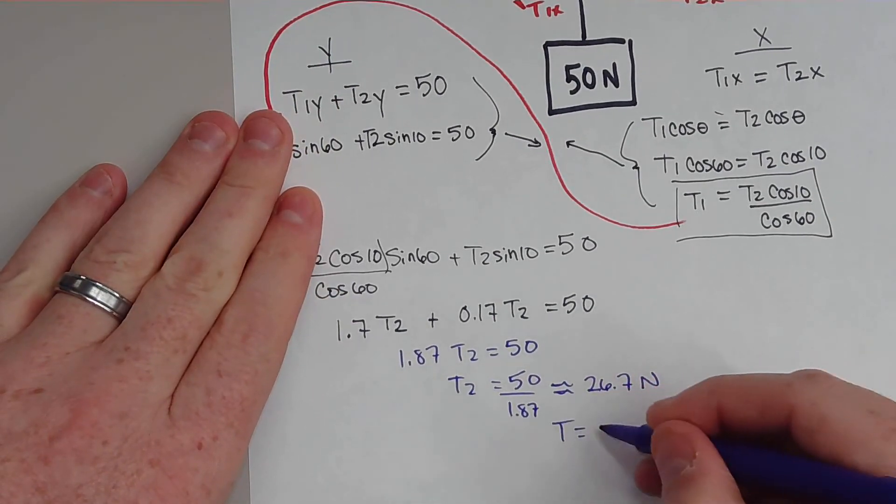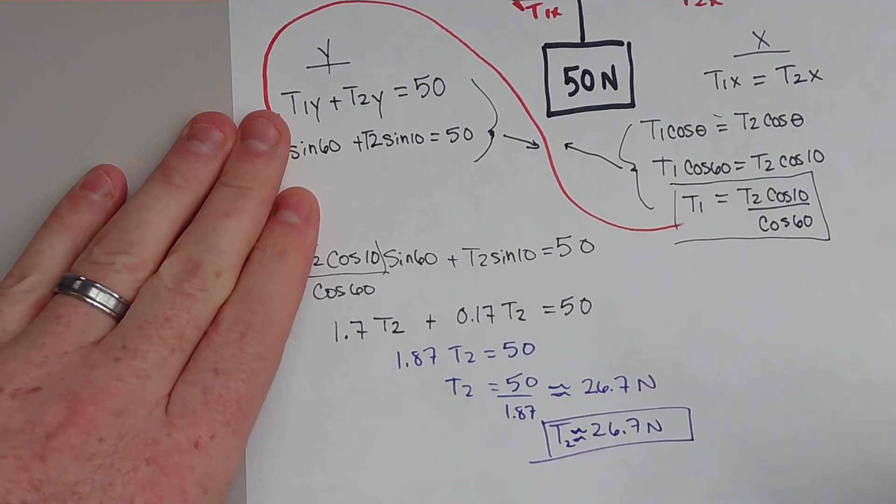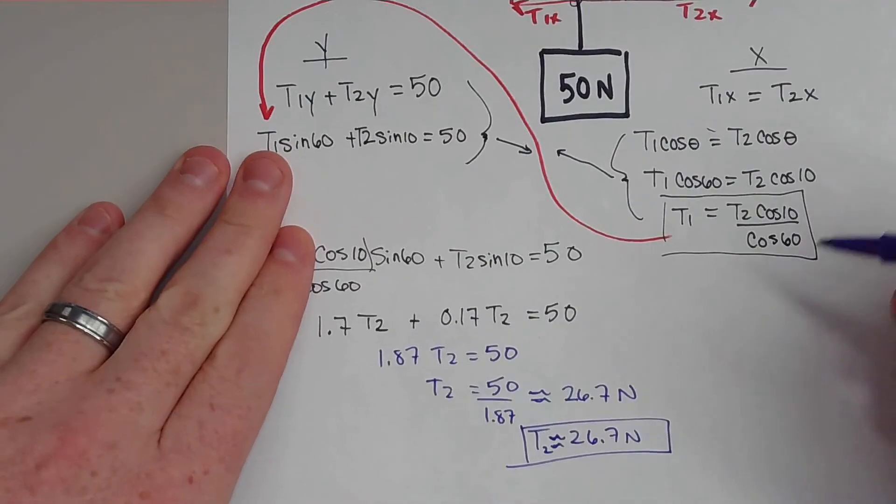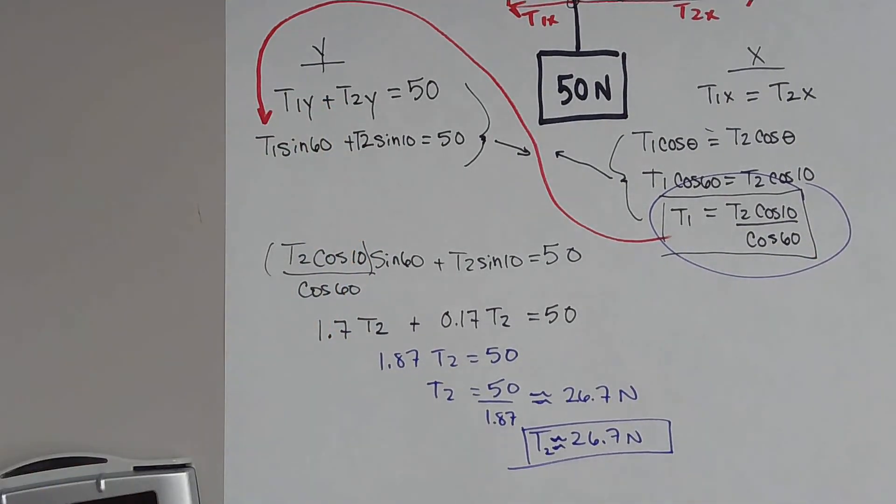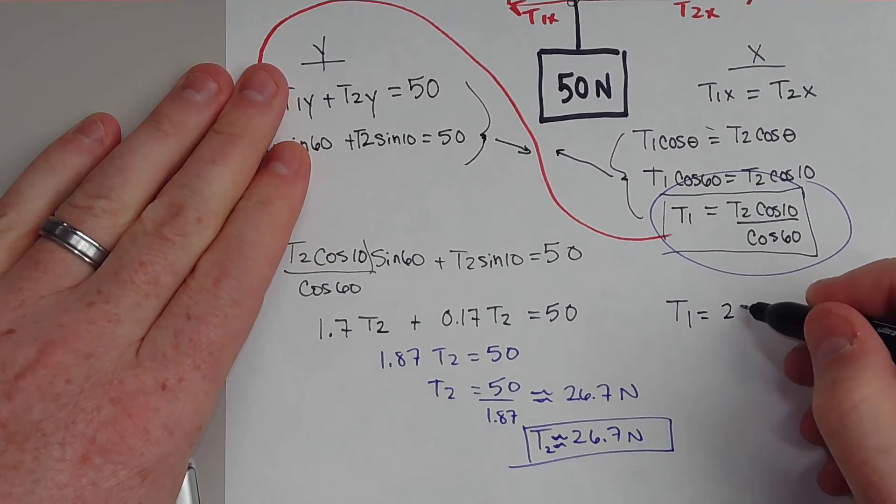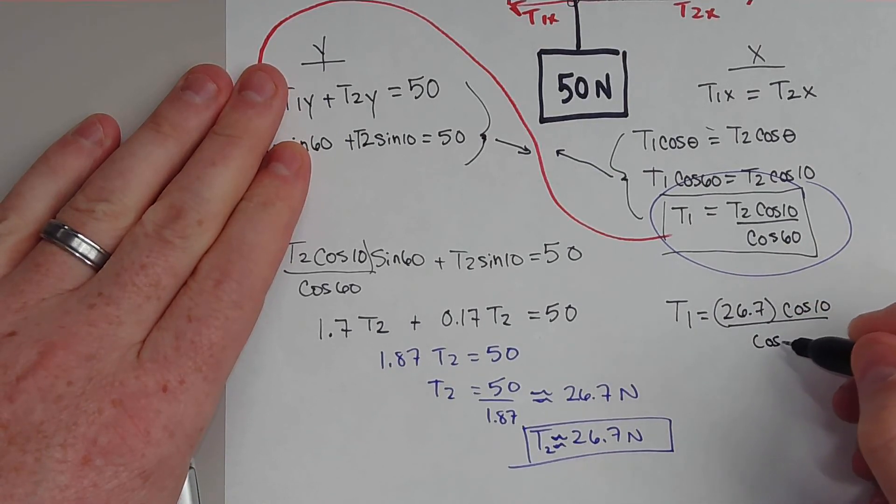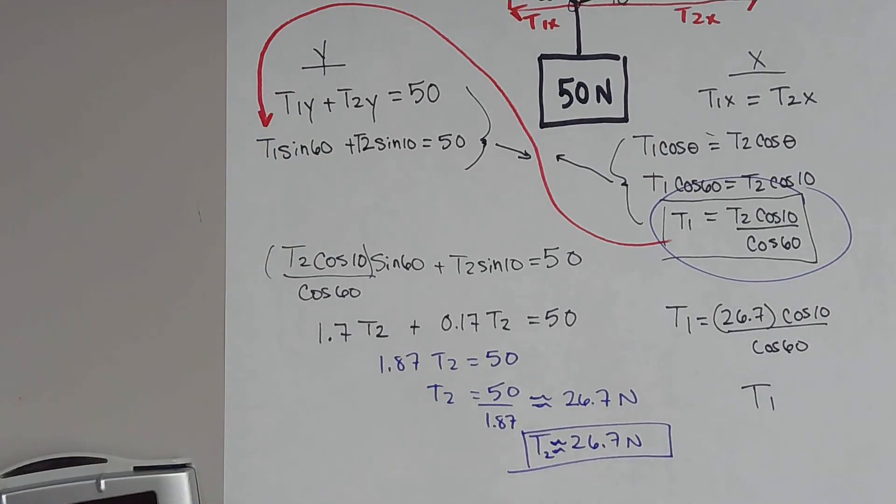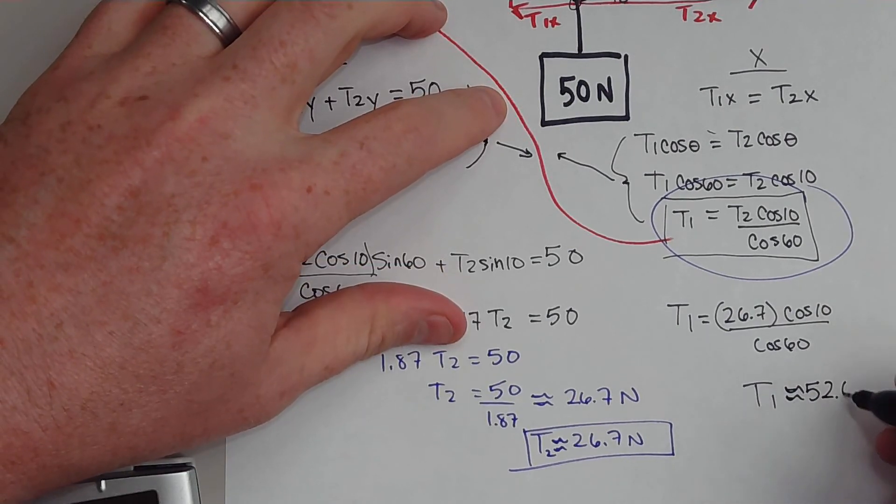So T2 is approximately 26.7 newtons, and that's important. And now if I want to know what T1 is, well, I come back up here, and I plug T2 in right there. So T1 would be equal to 26.7 multiplied by cosine of 10 divided by cosine of 60. And that gives me approximately 52.6 newtons.